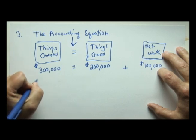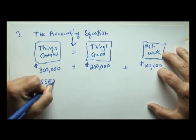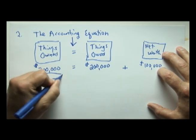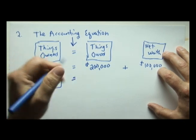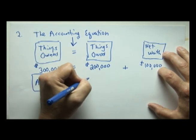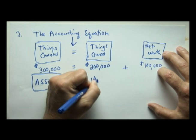Now, things owned in accounting are called assets. Debts owed are anything payable. These are called liabilities.